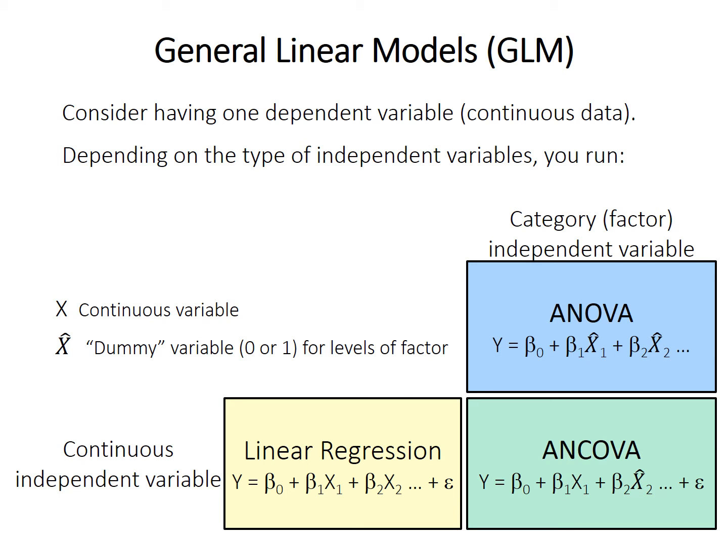ANCOVA is a type of general linear model when you have a mixture of continuous and categorical independent variables. You can think of it as an extension of ANOVA or an extension of linear regression, but in reality all three are just specific cases of the general linear model. ANCOVA tests whether the linear model differs for different levels of a categorical factor — is the relationship between continuous variable x1 and y different for different levels of grouping factor x2?